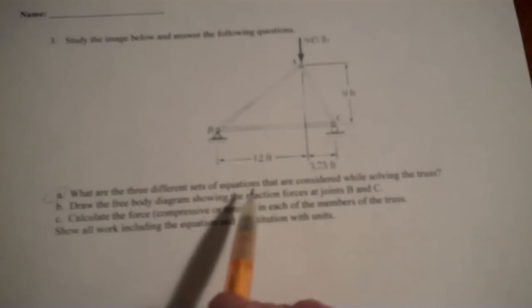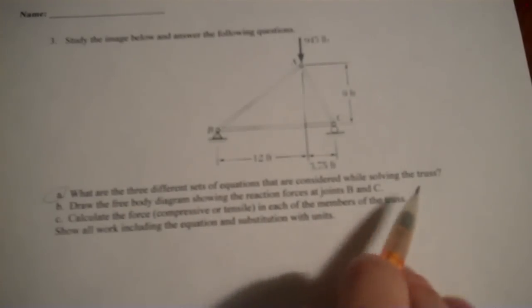Alright, let's tackle the truss. Truss ABC, it's a simple one though, because it's only three members, so it won't be too bad. First part, what are the three different sets of equations that are considered while solving the truss? Again, this is a static equilibrium, which means it's not moving.